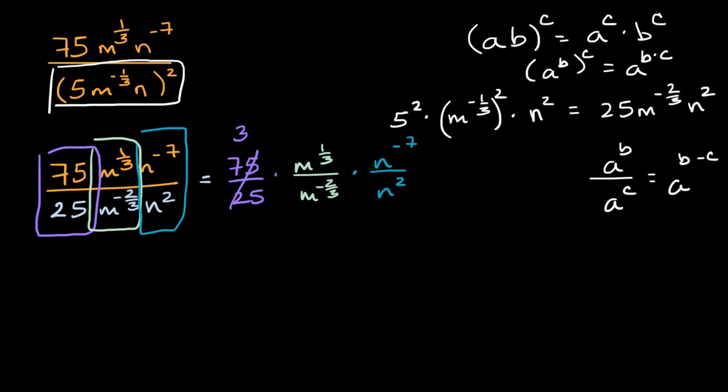So I can rewrite all of this business. I have my 3 here, 3 times m to the 1 3rd, and then I'm going to subtract this exponent. We have to be very careful. We're subtracting a negative. So we're subtracting negative 2 3rds. That's all that exponent for m. And then we're going to have times n to the negative 7 power minus 2.